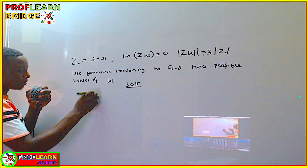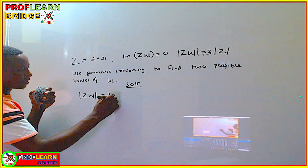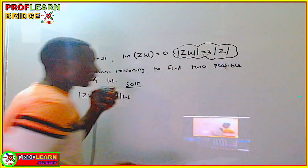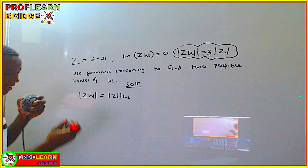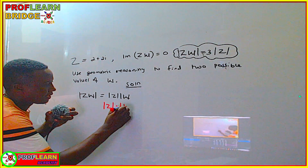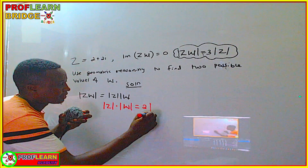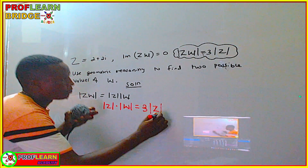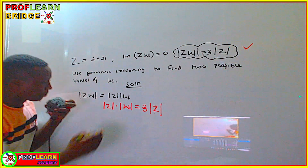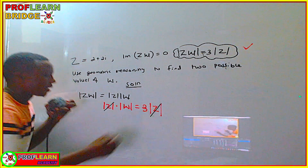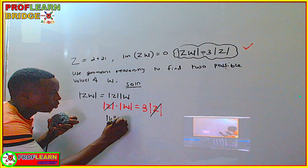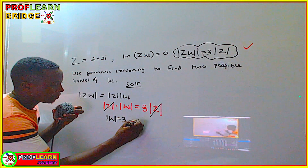We need to appreciate that the modulus of zw can be written as the modulus of z times the modulus of w. So the given condition becomes: modulus of z times modulus of w equals 3 times modulus of z. These cancel out, and we end up with modulus of w equal to 3.